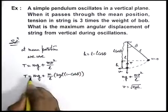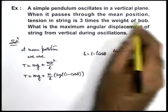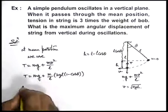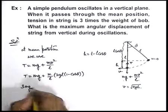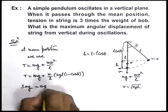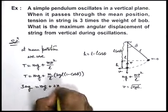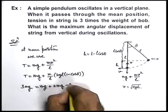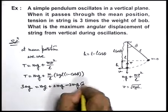And we're given that tension at this point is 3 times the weight of the bob, we can write this T as 3 m-g is equal to m-g plus 2 m-g minus 2 m-g cos theta.